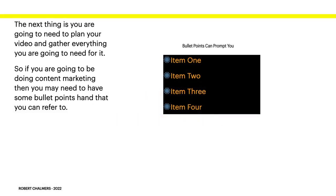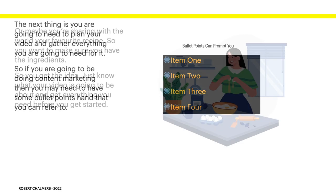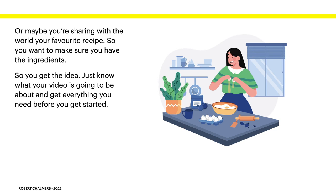Step 2: plan your video. You're going to need to plan your video and gather everything you need for it. If you're doing content marketing, have some bullet points on hand that you can refer to — prop them on your screen and just go through items one, two, three, and four as your video progresses. Or maybe you're sharing a favorite recipe, so make sure you have the ingredients. Just know what your video is going to be about and get everything ready before you start.